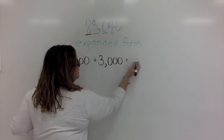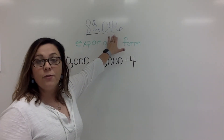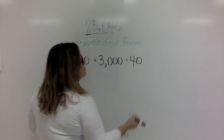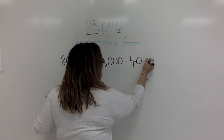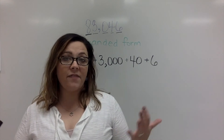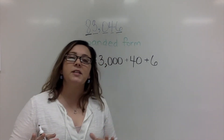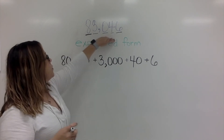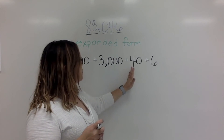I'm going to come to the 4. I put a plus sign and write that digit. Since the 4 is in the tens place, it has a value of 40. I can check myself — there's one digit after the 4, which means I need one zero. And finally I have one digit left: a 6. Since it's in the ones place it simply has a value of 6, and there's no digit after the 6 so I don't need to put a zero. So the expanded form of 83,046 is 80,000 + 3,000 + 40 + 6.